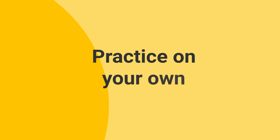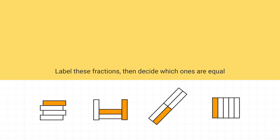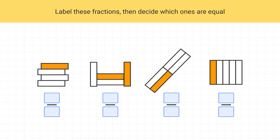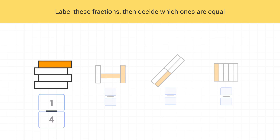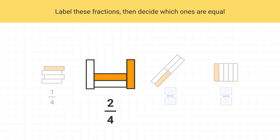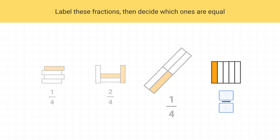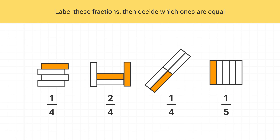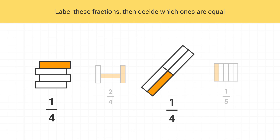Now it's time for you to practice this on your own. Label these fractions and decide which ones are equal. First you start by labeling the fractions: this is one-fourth, this is two-fourths, this is one-fourth, and this is one-fifth. Once you finish labeling the fractions, you can see that this one and this one are both one-fourth, so these two are equal to each other.